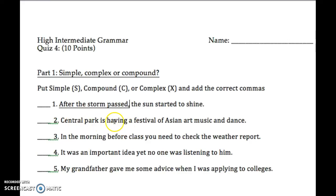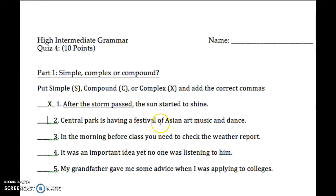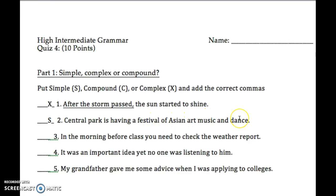In the next sentence: 'Central Park is having a festival of Asian art, music, and dance.' I think everyone understood that this was a simple sentence, but not everybody remembered to look for the list of three. The festival featured Asian art, music, and dance — three things. So we need to add a comma to separate the items in our list of three.